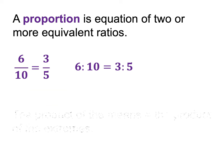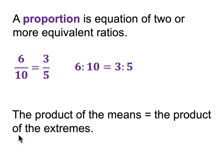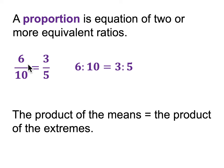We're going to focus on this theorem: the product of the means is equal to the product of the extremes. Between these two equal fractions, for example, 6 times 5 — this cross product — is 30, and 3 times 10 is also 30. This theorem is saying that always happens. In this case, 6 and 5 are the extremes — label each one as an extreme.